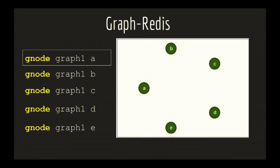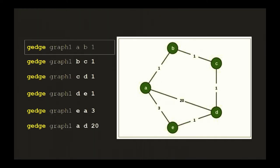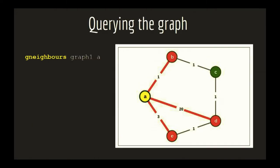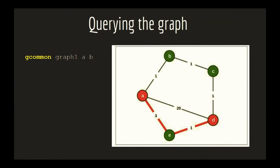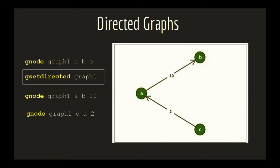After spending some time reading the source code of Redis, I managed to add some simple Redis commands to create graphs. The first one is to add nodes to the graphs, the other one is to connect the nodes by edges with values, some query commands like asking for the neighbors of a graph node, common neighbors of two nodes, and you can even create directed graphs.